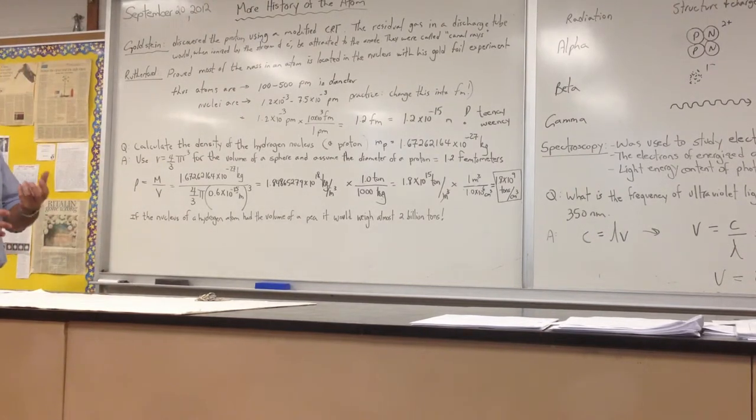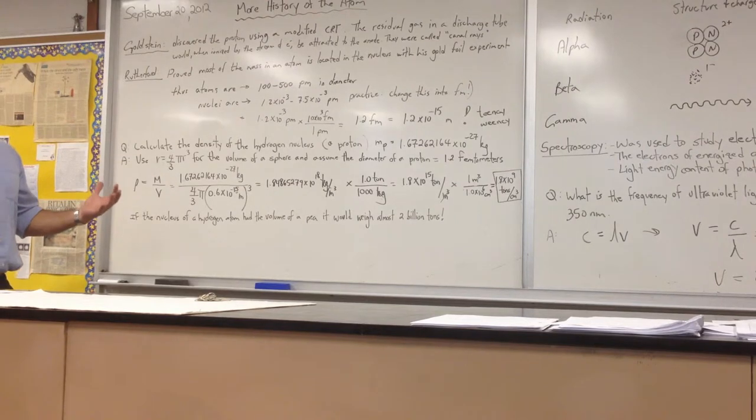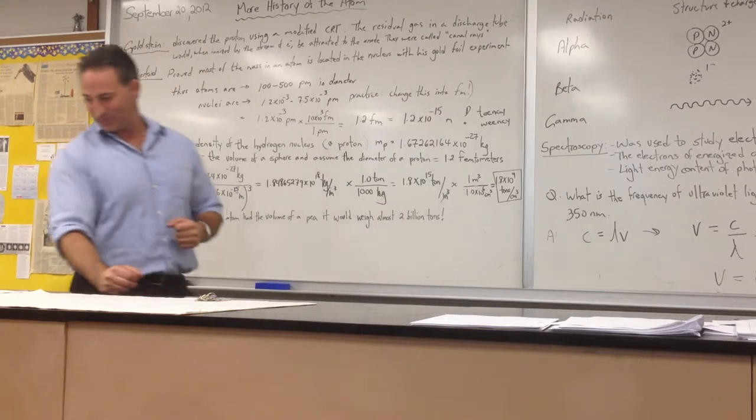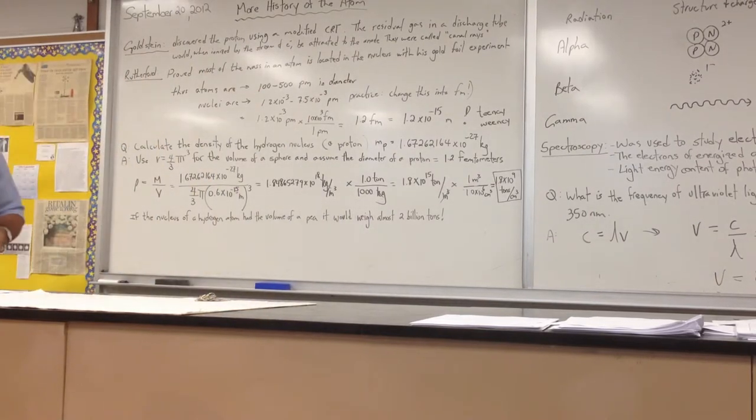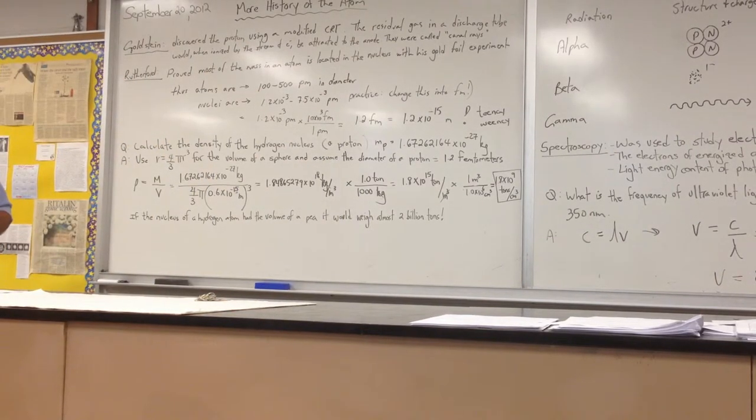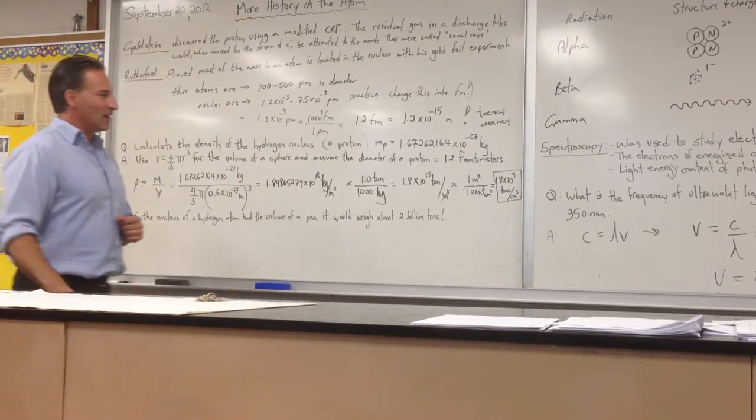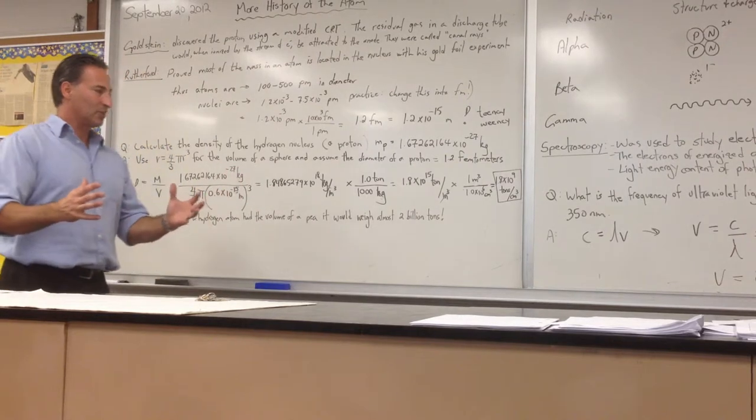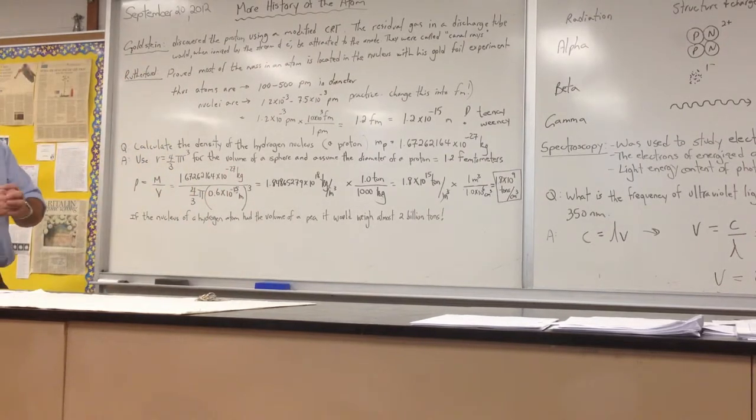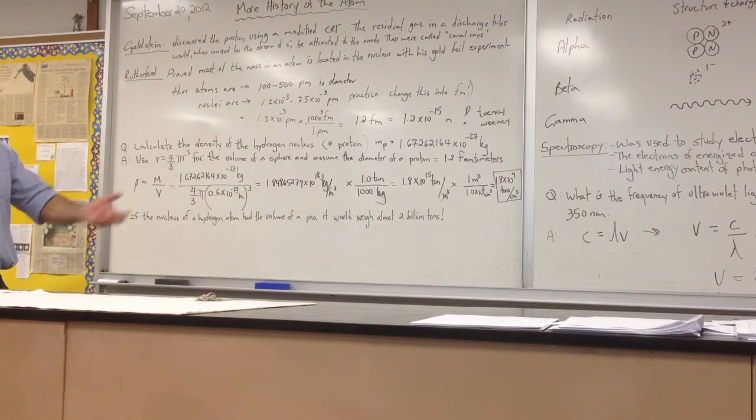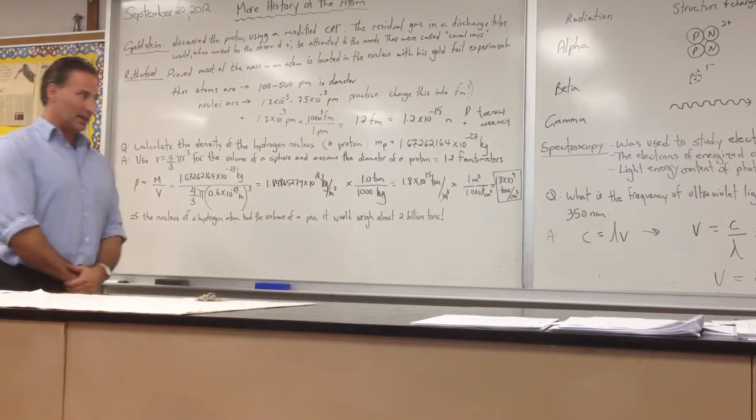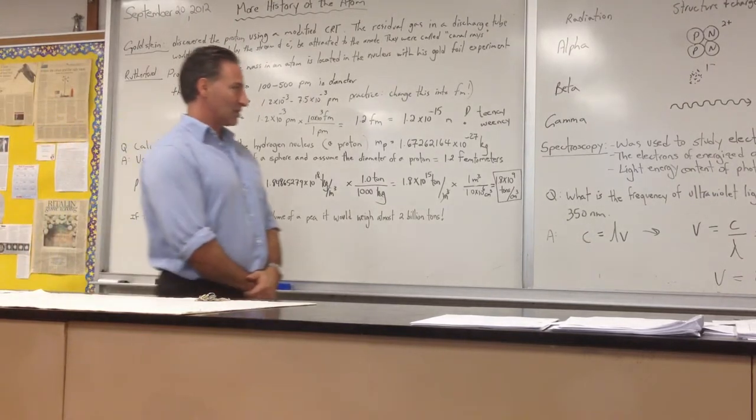So the analogy I like to use is, if the atom is the size of a football field - [PA interruption: Mr. Miller, please report to Room 216] - we're going to continue. The analogy I like to use is, if you made the atom the size of a football field, the nucleus would be the size of a marble in the middle of the football field, and the electrons would be buzzing around in the volume of the football field. But you wouldn't be able to enter the football field because the electrons would create some kind of force field as they move at close to the speed of light.